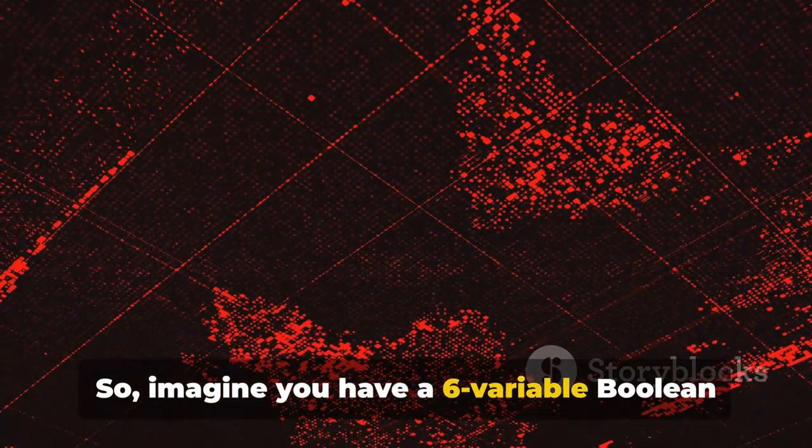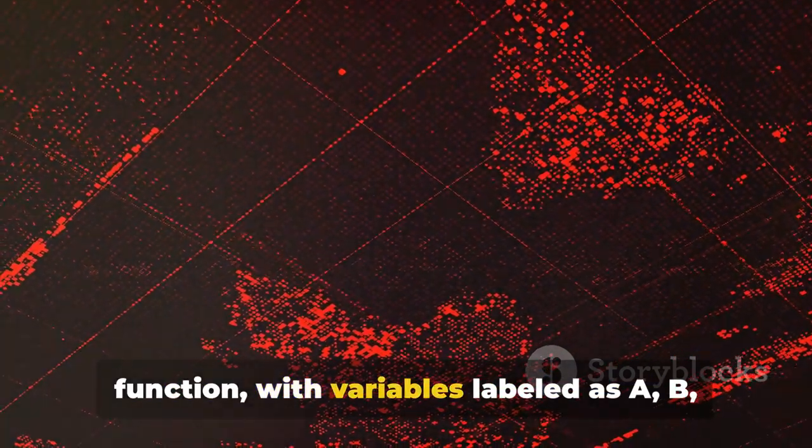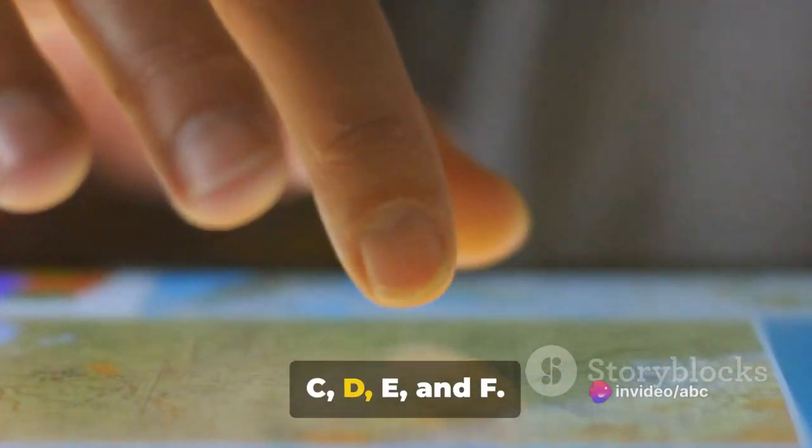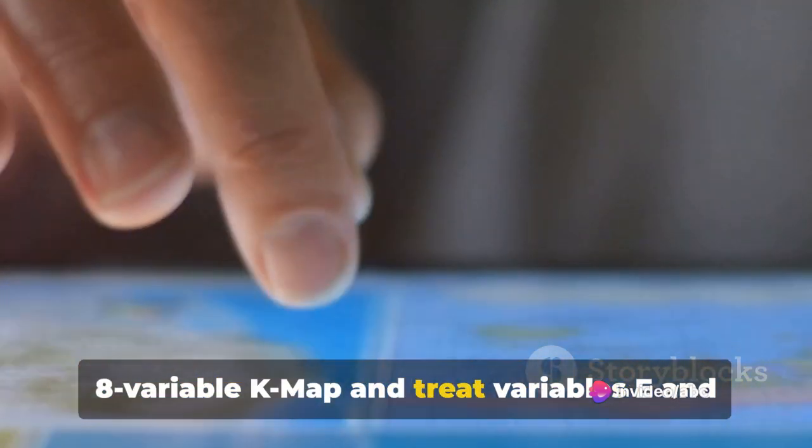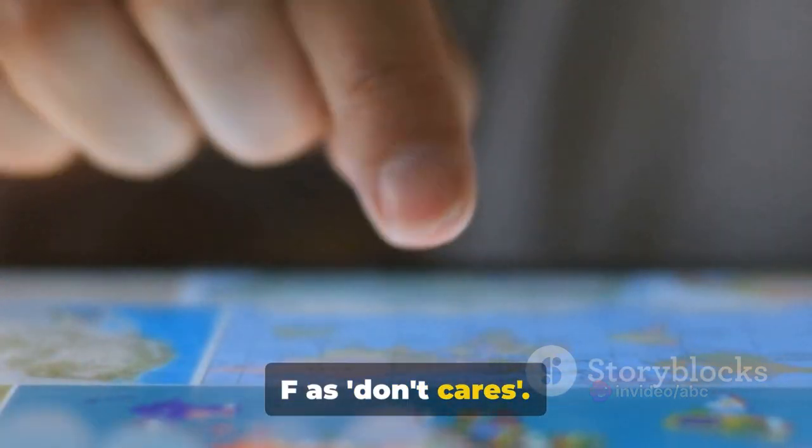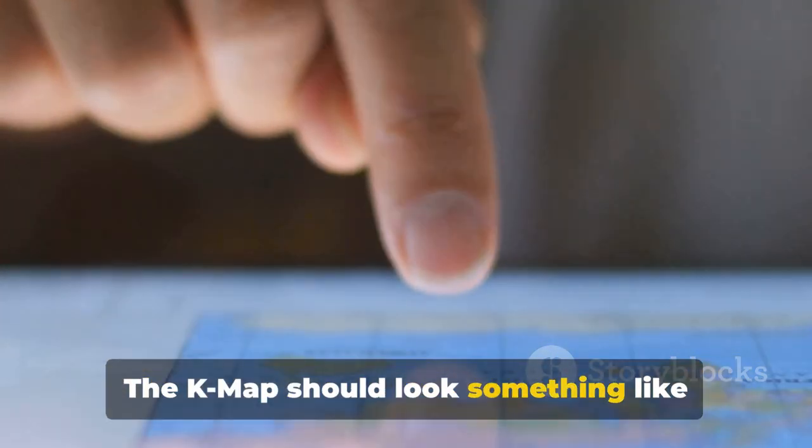So imagine you have a 6-variable Boolean function, with variables labeled as A, B, C, D, E, and F. To create a K-Map for this, we'll use an 8-variable K-Map and treat variables E and F as don't cares. The K-Map should look something like this.